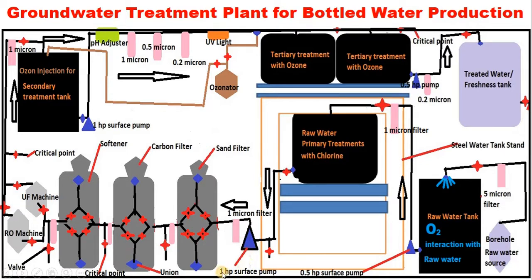Why do we have a 1 horsepower pump here when we used a 0.5 horsepower at the previous point? The reason is that up to the primary treatment tank we only had one resistance, but from this point onwards there are many more resistances requiring a much higher pump capacity to push the water through. The 1-micron filter removes debris before the water enters the sand filter.